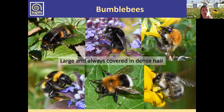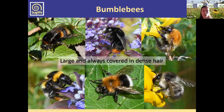The workers tend the nest, feed the young, and generally look after things. We also have six species of what we call cuckoo bees. Just like the bird, the cuckoo bee sneaks into the social bumblebee nest, lays her eggs there, and then the workers of the original nest tend them. The female cuckoo bee doesn't provide for any of her offspring and therefore doesn't need to collect pollen.